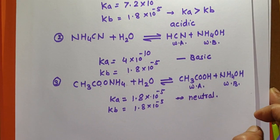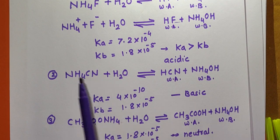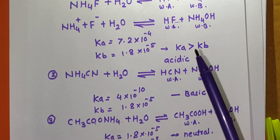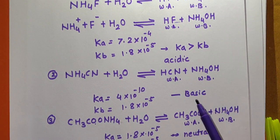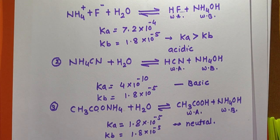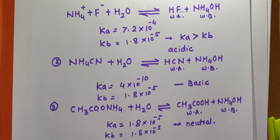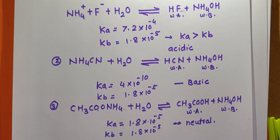For the salt of weak acid and weak base, both cation and anion react with water. The solution can be acidic, basic, or neutral depending on the relative strengths. Hydrolysis is defined as the reaction in which the cation and anion both react with water to give acidic, basic, or neutral nature to the solution.